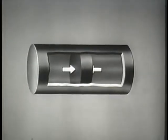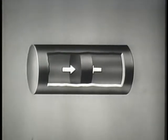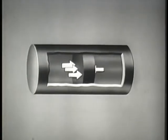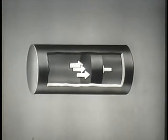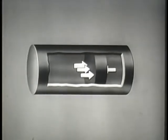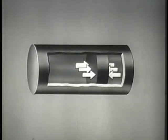Pressure differential is illustrated by this section of pipe. In the pipe is a movable block. The arrows on either side of the block represent equalized pressure. As pressure on one side of the block is increased, a pressure imbalance or differential is created in the pipe, moving the block in the direction of the lower pressure. The moment the pressure on the opposite side is increased to equalize the pushing force, the motion of the block is stopped.